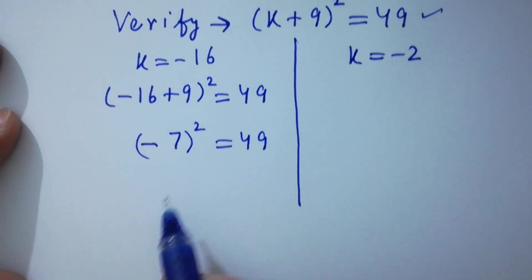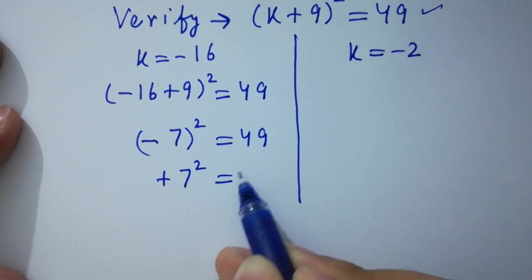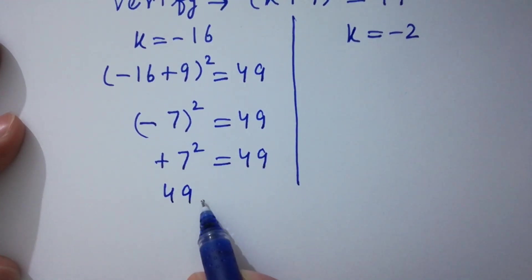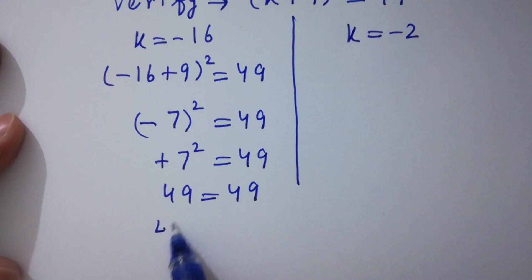Minus minus plus, we have here +7² = 49. 7 times 7 is 49. 49 = 49. Left hand side equal to right hand side.